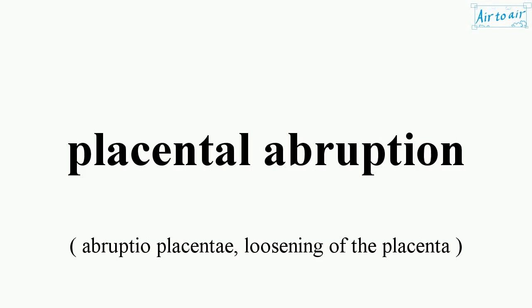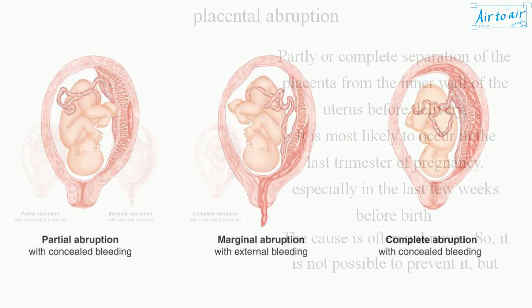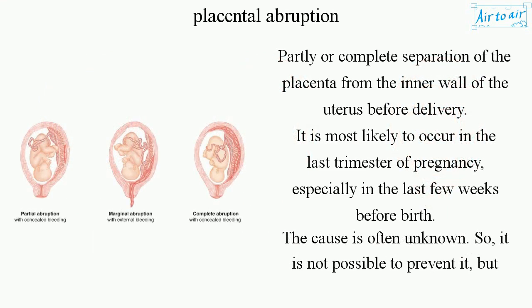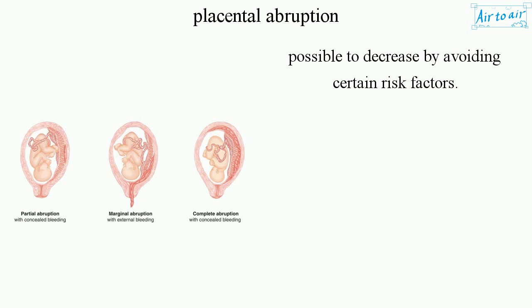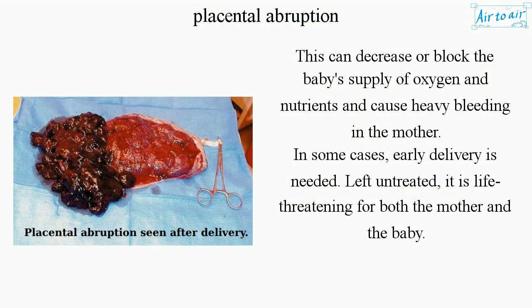Placental abruption is the partial or complete separation of the placenta from the inner wall of the uterus before delivery. It is most likely to occur in the last trimester of pregnancy, especially in the last few weeks before birth. The cause is often unknown, so it is not possible to prevent it, but possible to decrease by avoiding certain risk factors. This can decrease or block the baby's supply of oxygen and nutrients and cause heavy bleeding in the mother. In some cases, early delivery is needed; left untreated, it is life-threatening for both the mother and the baby.